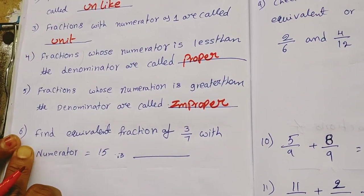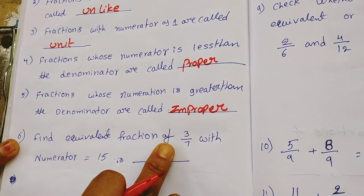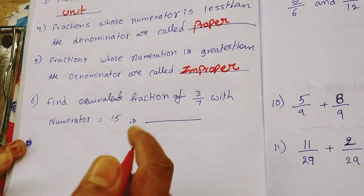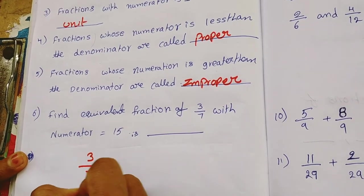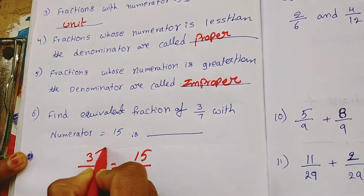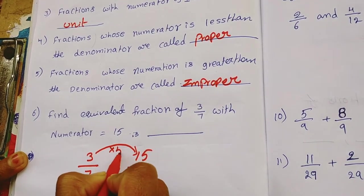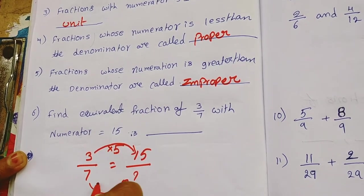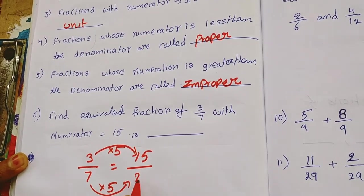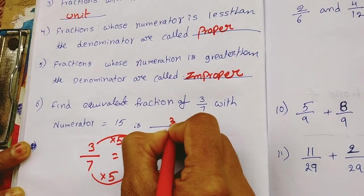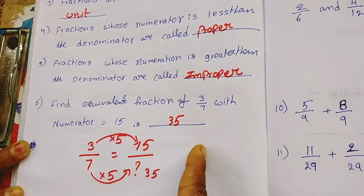Find equivalent fraction of 3 by 7 with numerator equals to 15. That means here 3 by 7 equals 15 by how much? Here 3 into 5, 3 into 5 is 15. Then here also 7 into 5, 7 times 5 is 35. So what is the answer here? Here is 35.